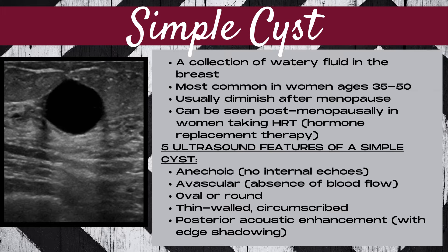There are five ultrasound features of a simple cyst. Number one: anechoic — this means there are no internal echoes within the cyst; it's completely black inside. Feature number two: avascular — this means there is no blood flow within the mass with color, power, or spectral Doppler.